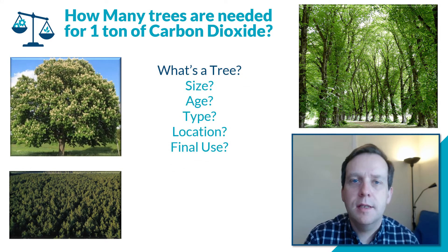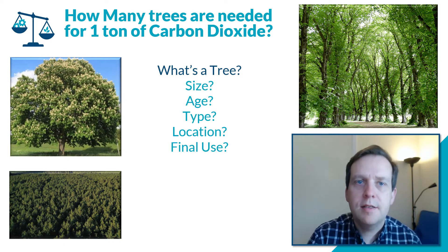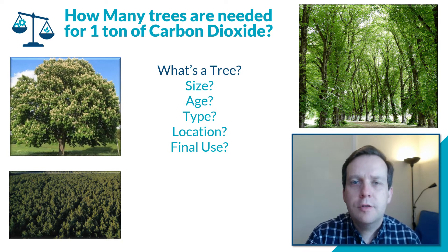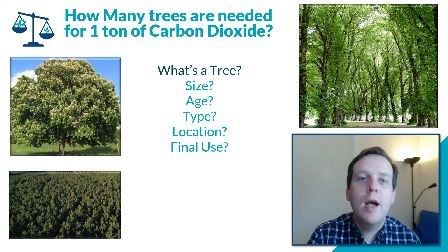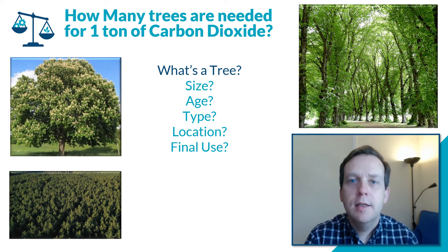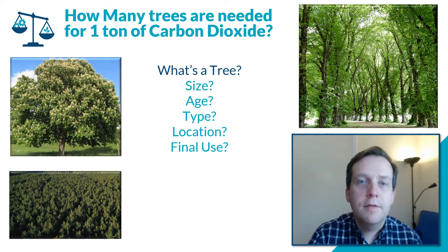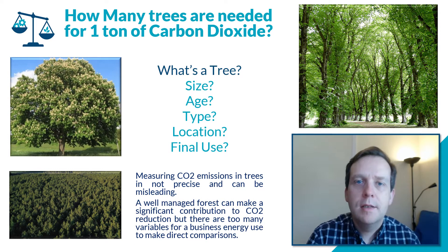How many trees are needed for one tonne of carbon dioxide? A lot of measurements of carbon footprint are based around the number of trees planted. But if you really want to understand carbon and carbon tonnage, using trees is an inexact science — because what is the size of the tree? What is the age of the tree? What type of tree is it? Where is it? And ultimately, what's the final use of the tree? Because a tree doesn't magic away carbon dioxide. A growing tree takes the carbon dioxide from the air and converts it to wood. Once that tree dies, the carbon dioxide in that tree gets released back into the environment. So it's more of a carbon dioxide sink than a solution.